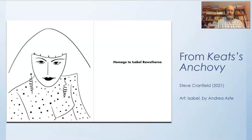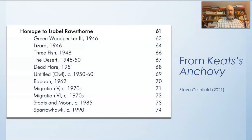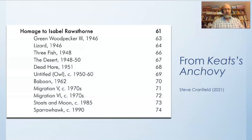She was in fact an artist who was the intellectual equal of many of the people that she inspired as a model or subject. I've written a number of poems in the book — eleven poems called a homage to Isabel Rawsthorne — and they are based on paintings of hers from the 1940s to the early 1990s. She died in 1992, and the poem I'm particularly interested in talking about today is called 'Lizard 1946.'